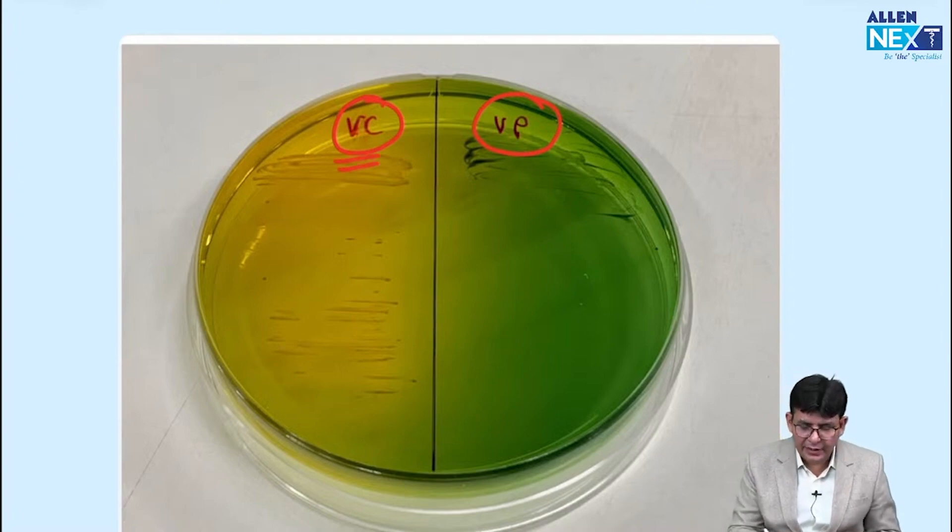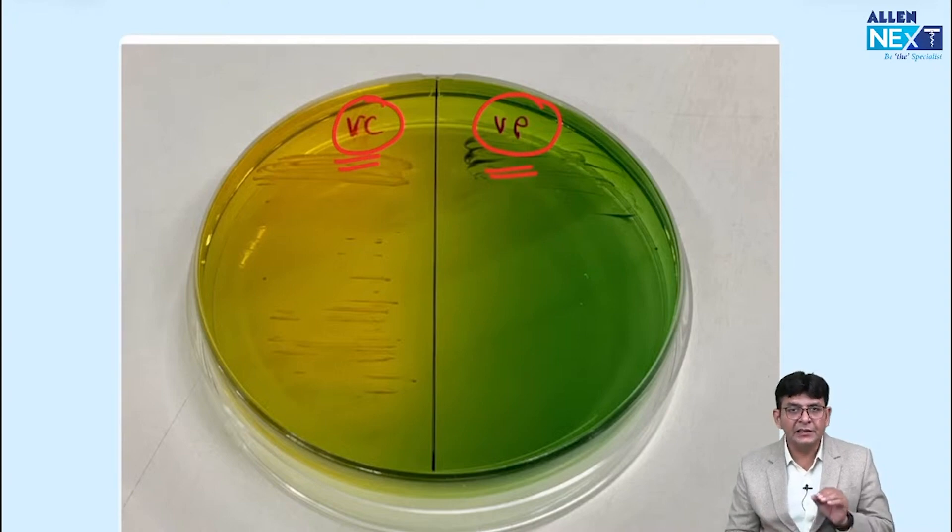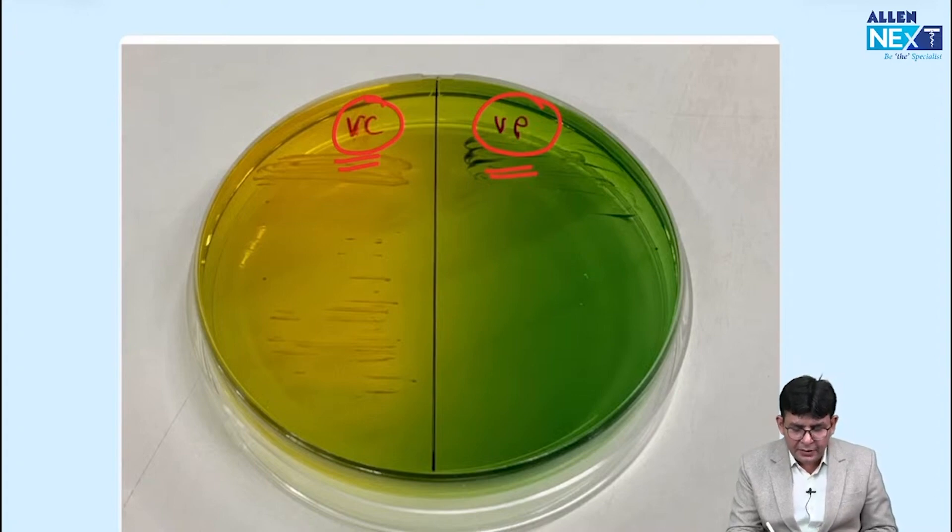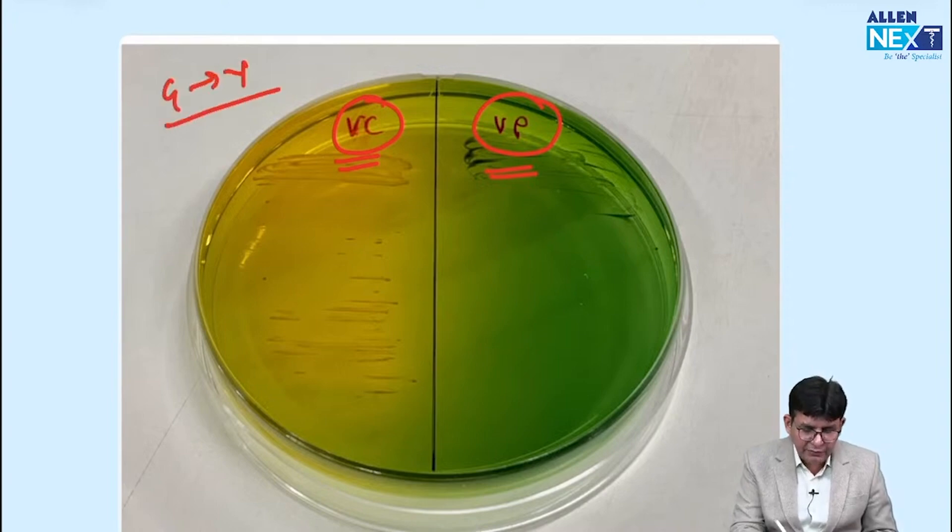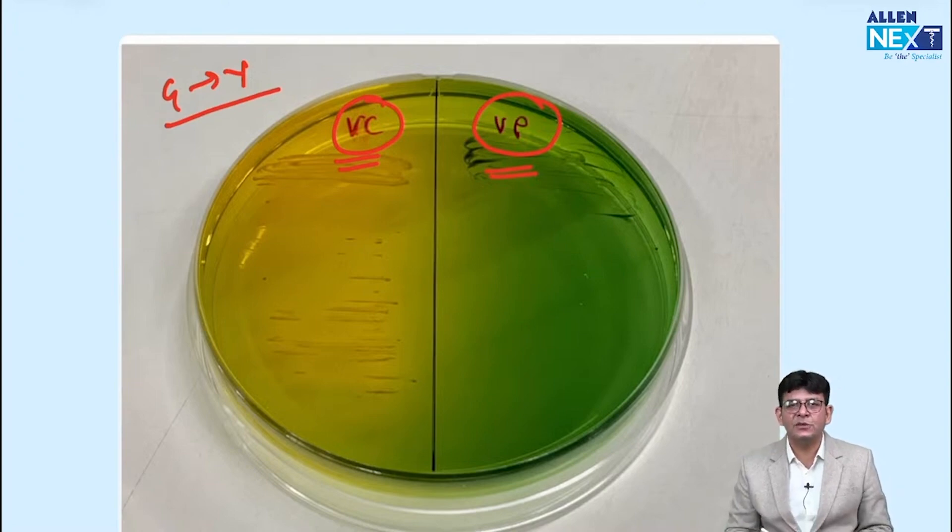It is Vibrio cholerae and it is Vibrio parahemolyticus. And as you can see the difference between them, the VC have changed the color of TCBS from green to yellow. So there is a change in the color from green to yellow by the Vibrio cholerae. Why? Because it is a sucrose fermenter. It is a sucrose fermenter,